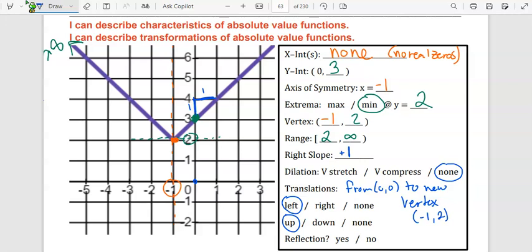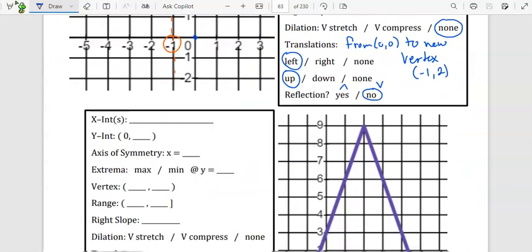And then reflection: it does not have one. If it's a V, it's no. If it's an upside-down V, it's yes for these kinds. Try the next problem on your own.